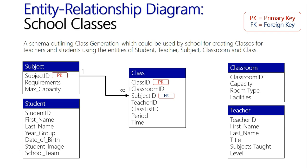Each class has one subject, but classes will have a variety of different subjects associated with them, so there's a one-to-many relationship. Students going into these classes will have more than one class — they'll have English, math, and so on. Next is the room: one room is assigned to every class, but each room is obviously used multiple times by the school, so once again it's a one-to-many relationship.